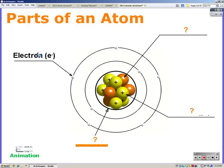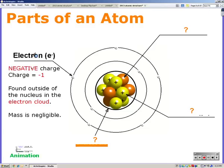So the parts of the atom, we have the electron, which is in the outer area. It has a charge of negative 1, found outside the nucleus in the electron cloud, and the mass is negligible. The exact mass, though, is 9.11 times 10 to the negative 31 kilogram.